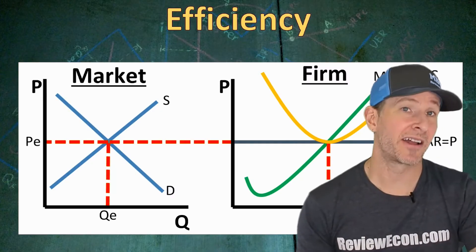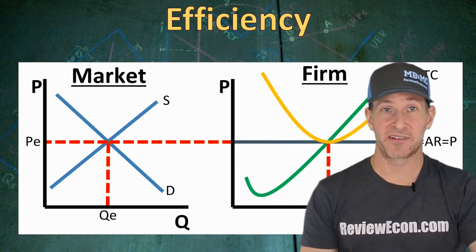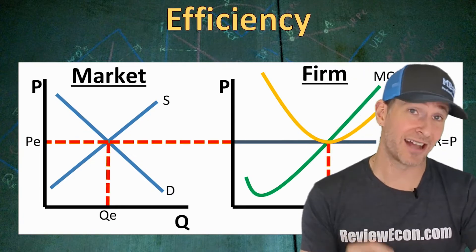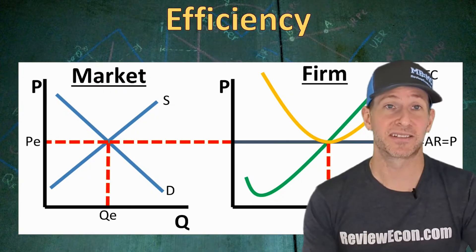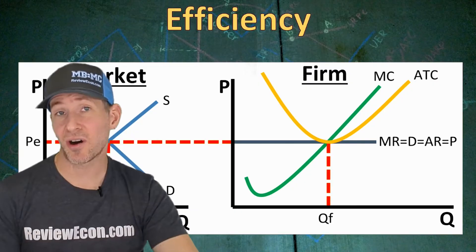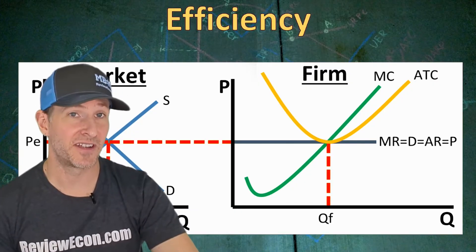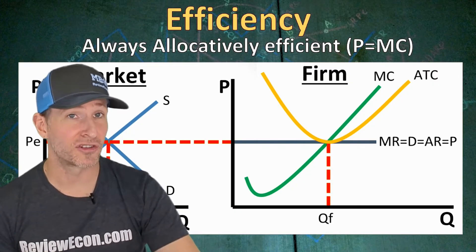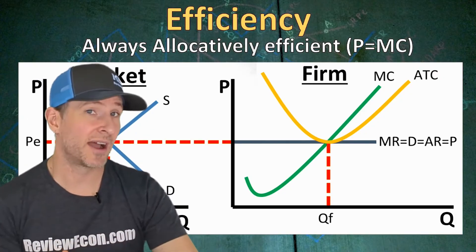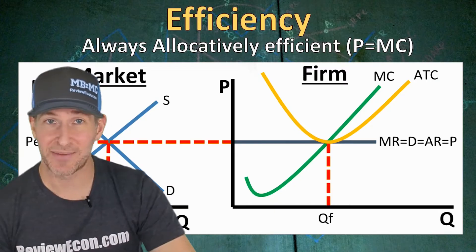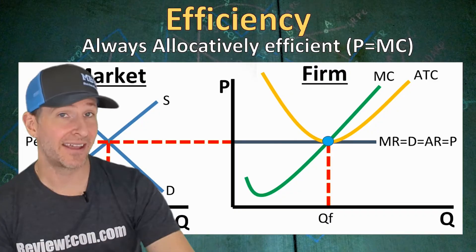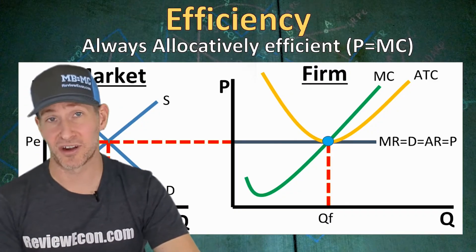Next, we're going to talk a little bit about efficiency in regards to perfectly competitive markets and firms. As you have already learned, perfectly competitive markets at equilibrium are allocatively efficient because they maximize consumer surplus. But the firm within a perfectly competitive market is also going to be allocatively efficient, and that's because they price at marginal cost. They do that in the long run as we have here — we're at QF, the marginal cost equals the price curve, or MR-DARP, and that allocatively efficient point is found right there at the intersection of the MC and MR-DARP curve.